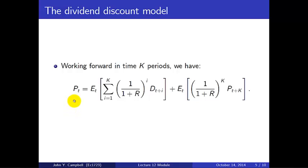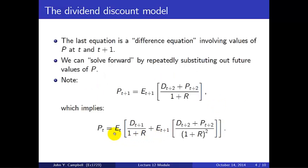We can keep repeating this operation. Going forward k periods, the price equals the expected sum of discounted dividends over the next k periods: D_{t+1} discounted by 1/(1+R), D_{t+2} discounted by 1/(1+R)², and so on up to time k, plus the expected discounted price at terminal date t+k. You may wonder what happened to the future expectations — by the law of iterated expectations, the expectation today of the expectation tomorrow of something is just the expectation today of that something, so we can eliminate all the intermediate expectations.